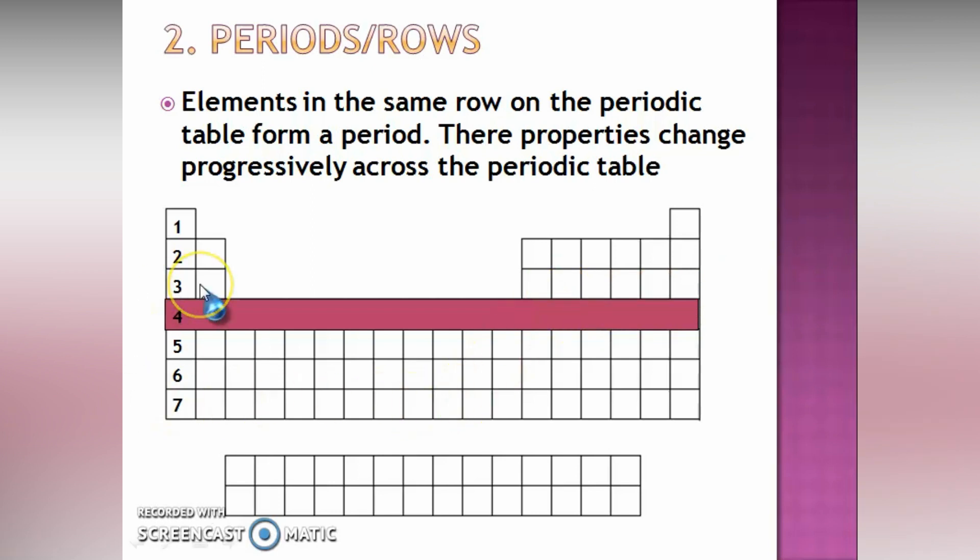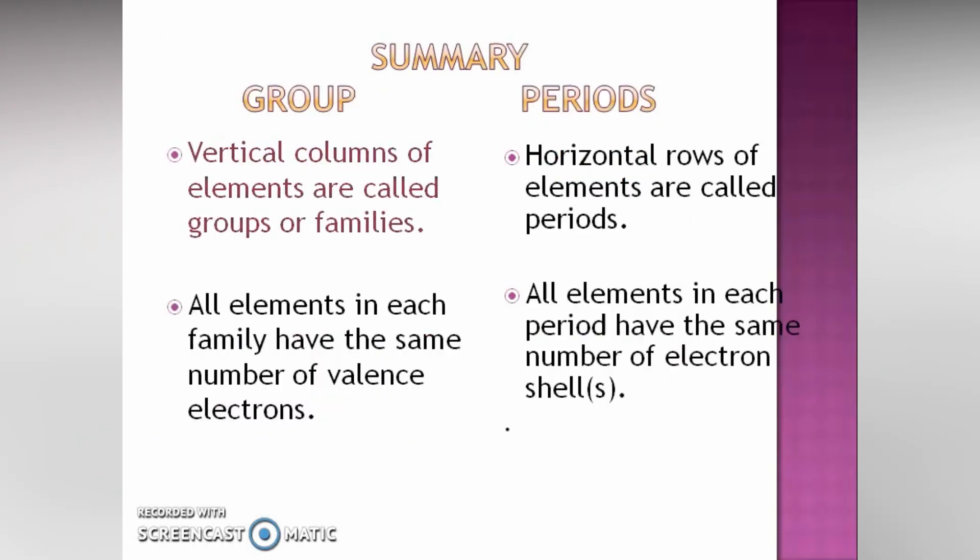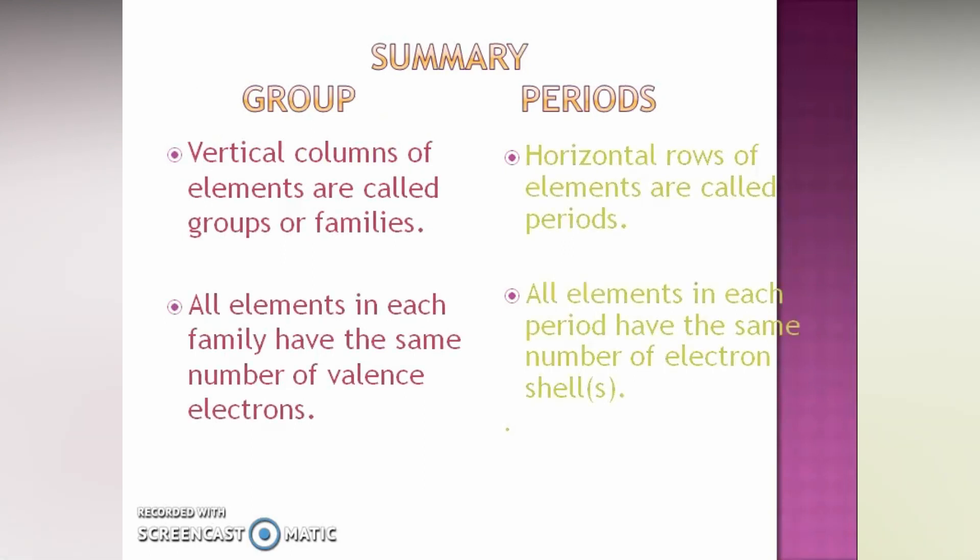Now, we have 7 different periods on the periodic table. Now, this is the summary of it. Groups are vertical columns of elements while periods are horizontal rows of elements.